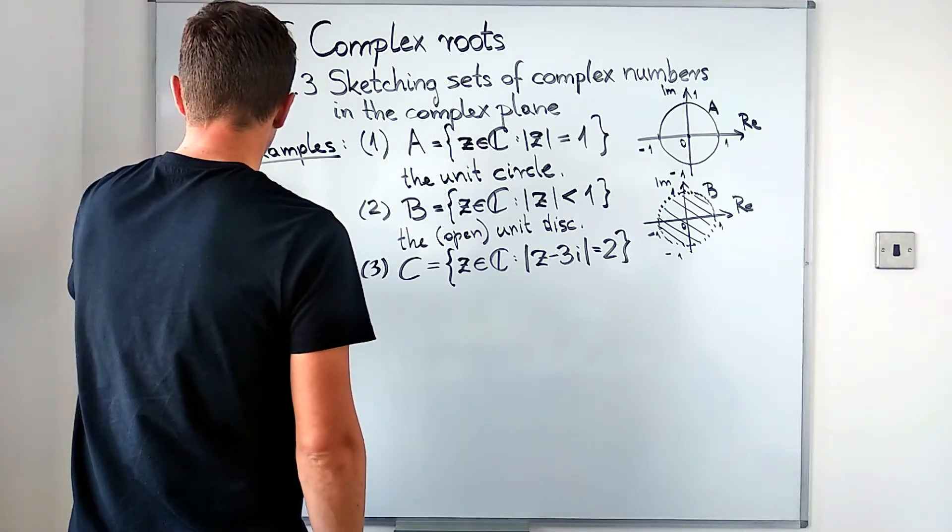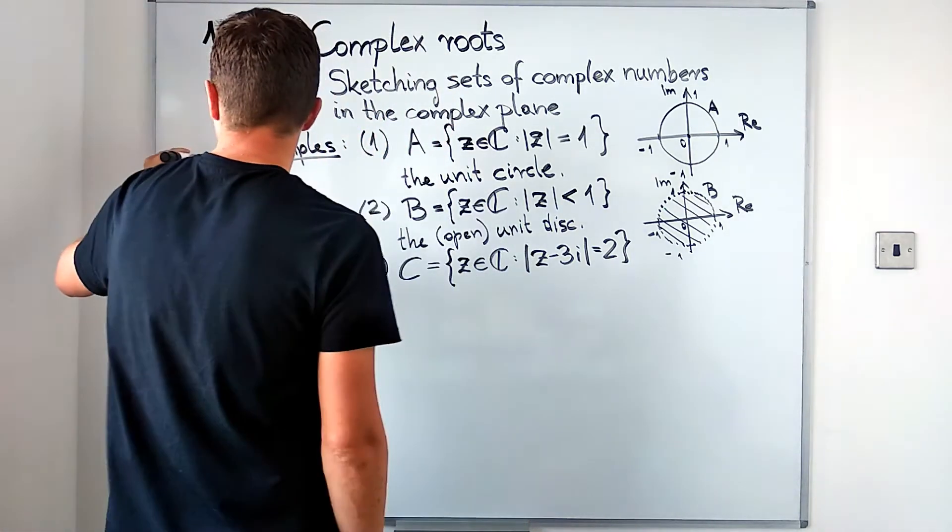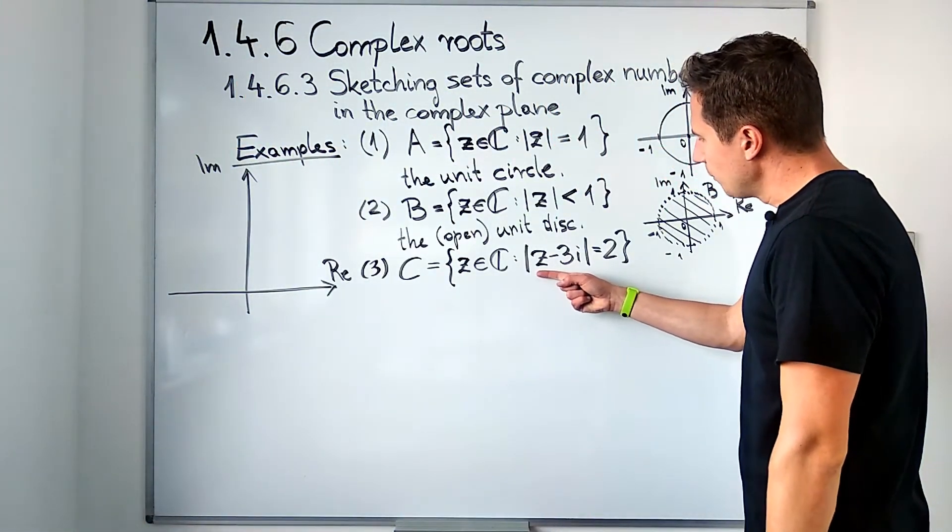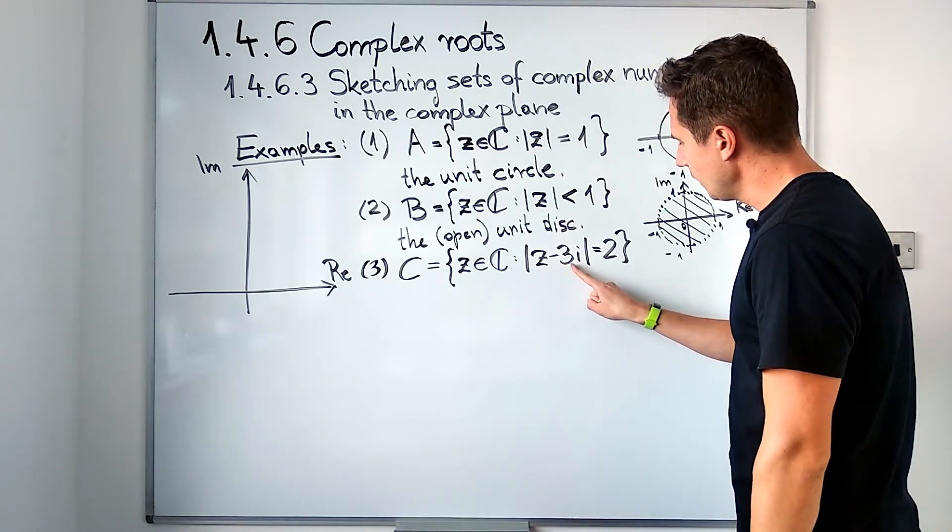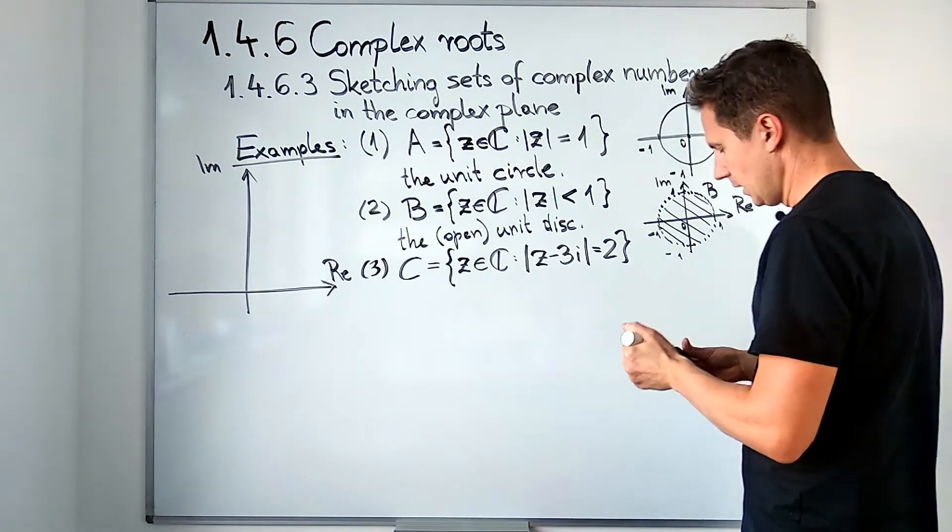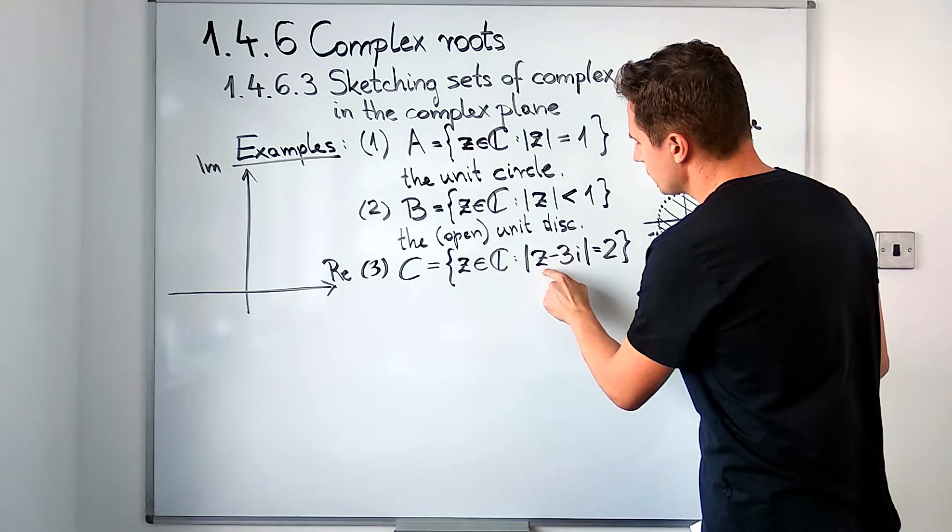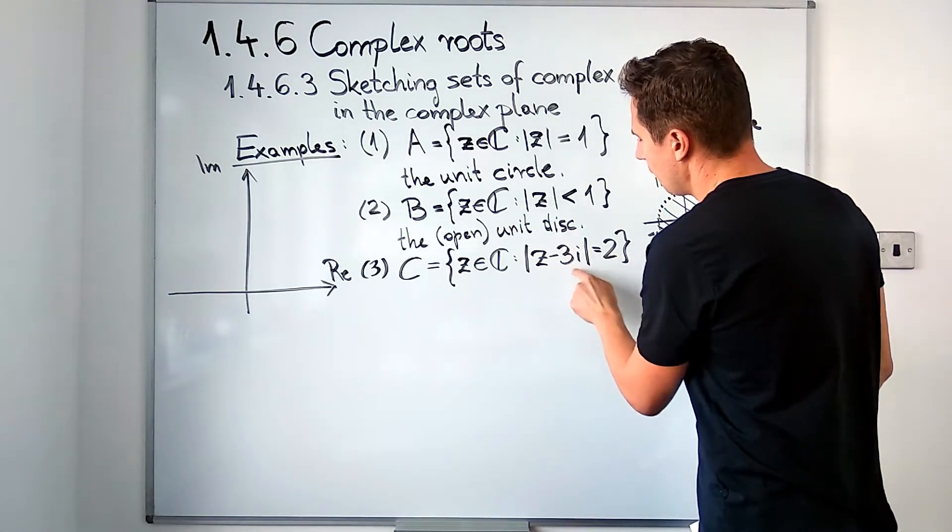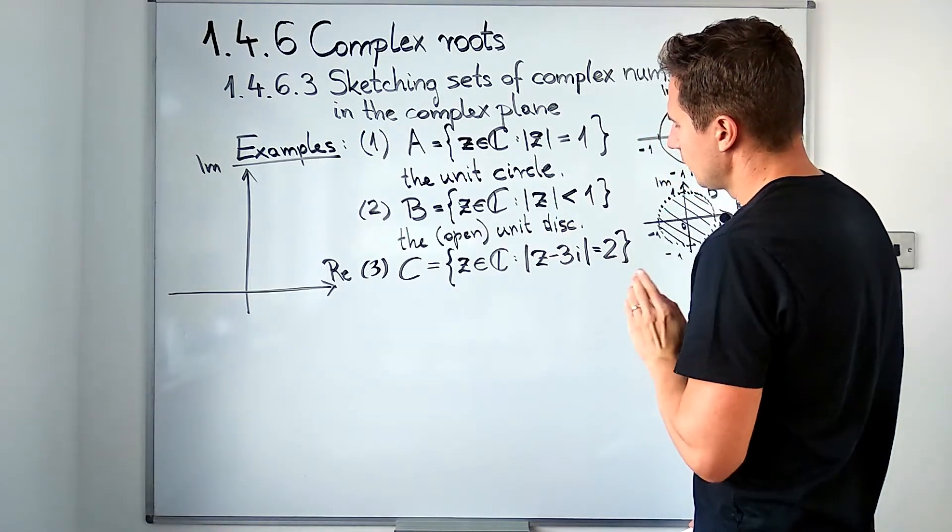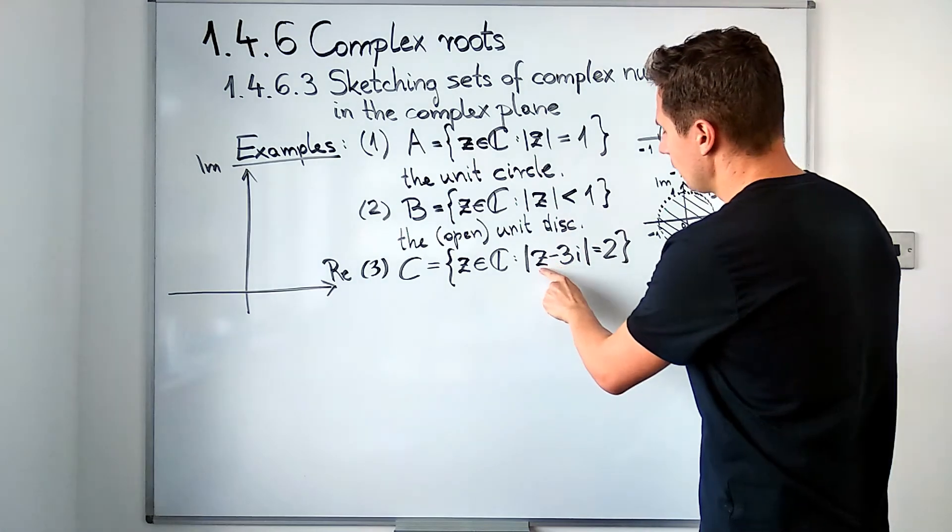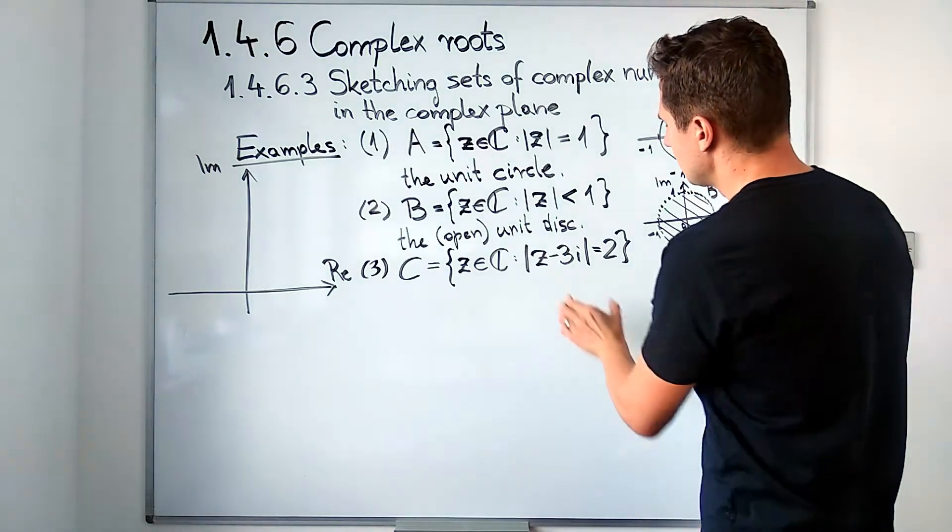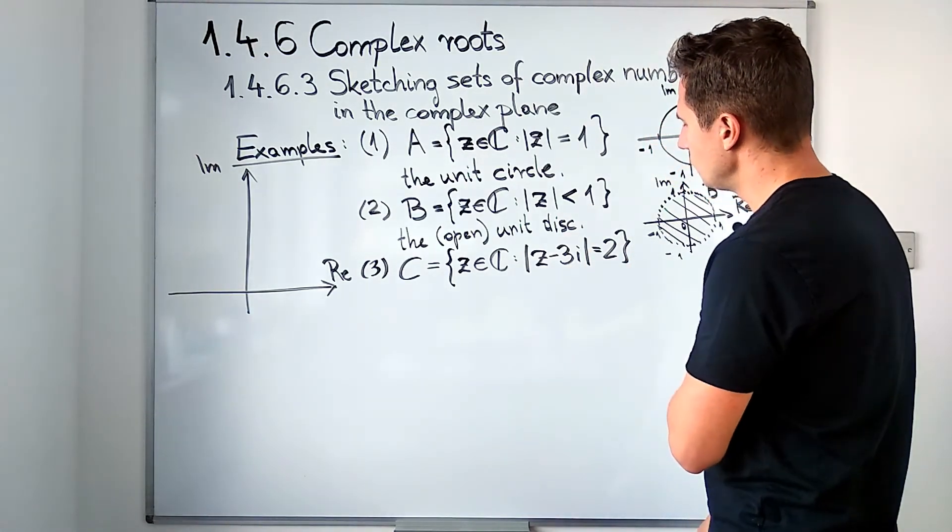Let's try to sketch this set of complex numbers. This is going to require a bigger diagram. What we are looking at is numbers which have their difference with 3i with length 2. The way I would like you to imagine this is we are looking for numbers which are two units of distance away from 3i.